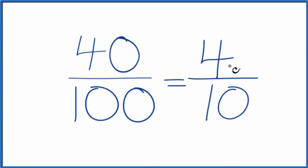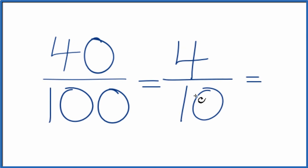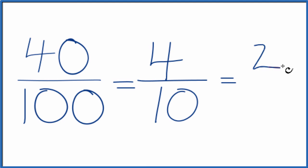But we can still reduce this down further, because these are even numbers. So let's just divide both by 2. 4 divided by 2 is 2, and 10 divided by 2 is 5.